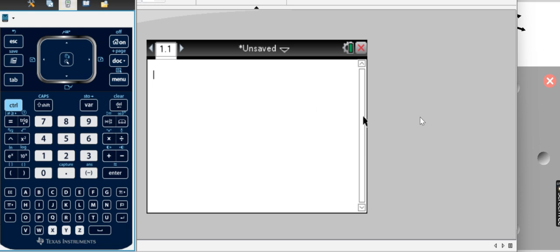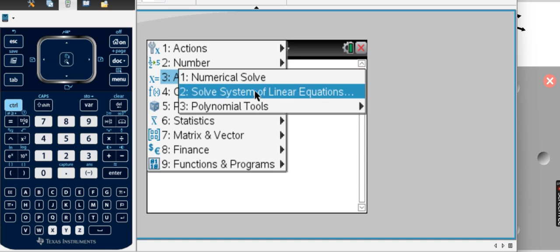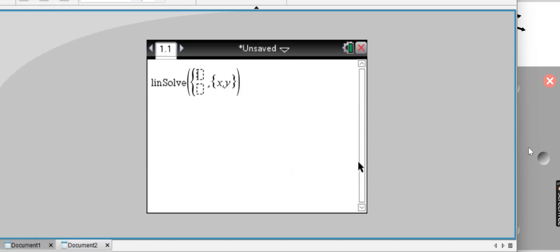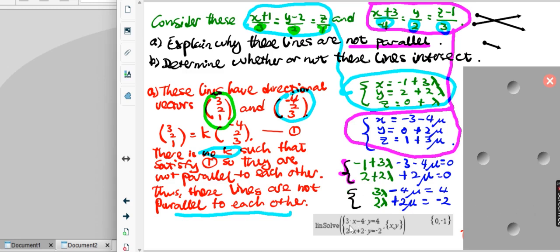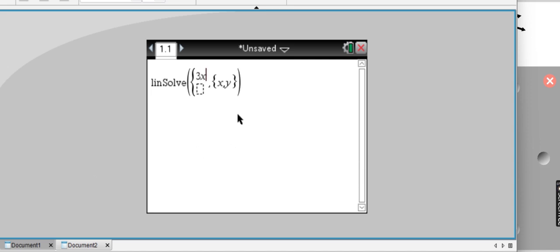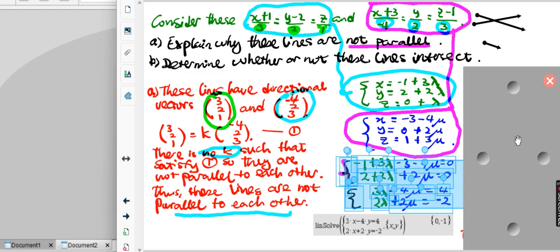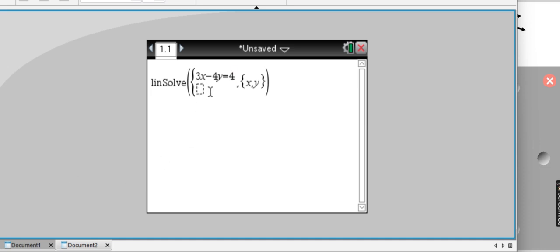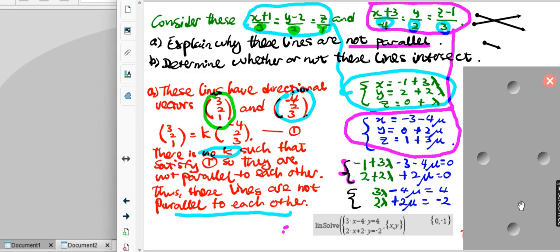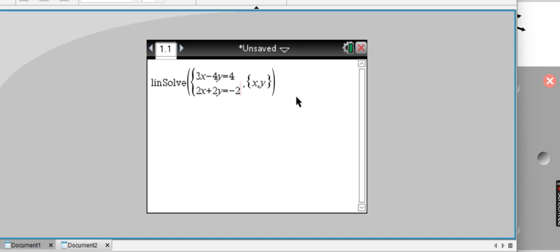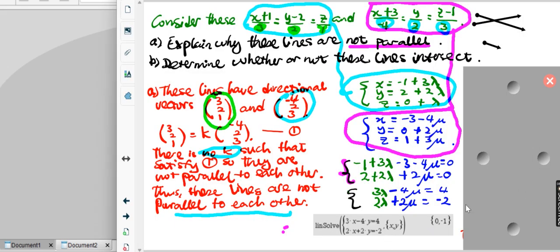Go to menu, algebra, solve system of linear equations. I put in three x minus four y equals four, and two x plus two y equals minus two. Press enter. The answer is x equals zero, y equals negative one. So lambda equals zero, mu equals negative one.